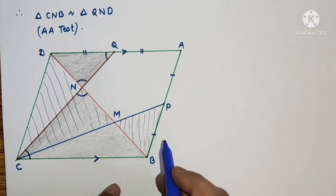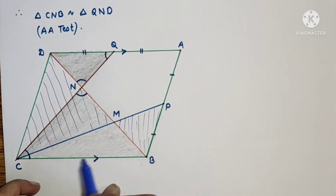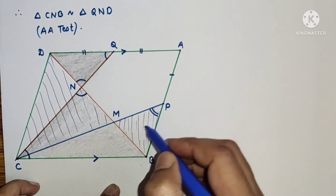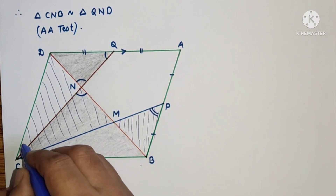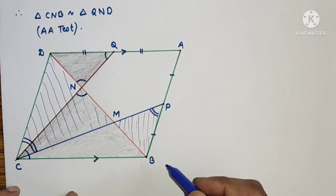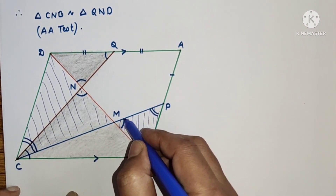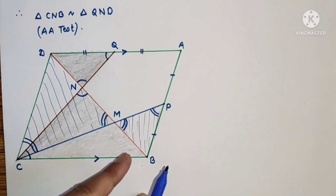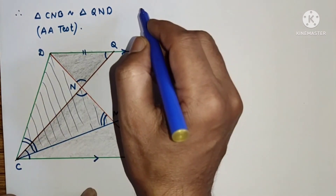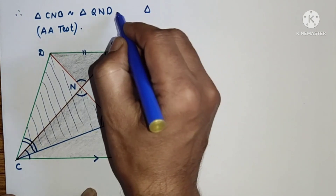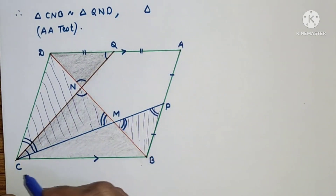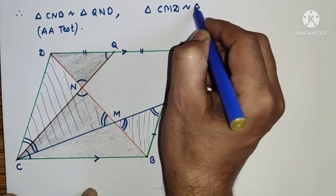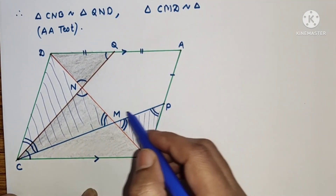Similarly, we can prove that triangles MPB and CMD are similar. This angle is equal to this angle by alternate angles, and these two angles are vertically opposite angles and therefore equal. So triangle CMD is similar to triangle PMB by AA test of similarity.